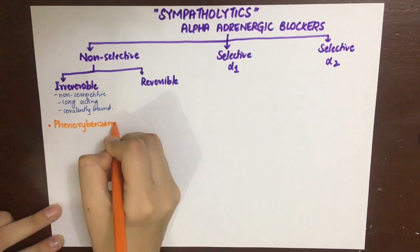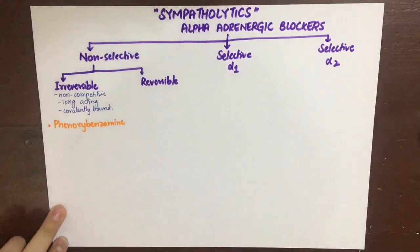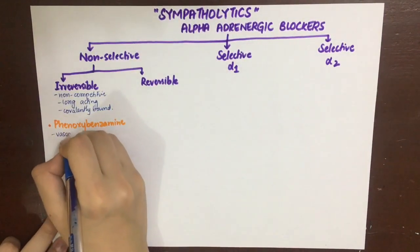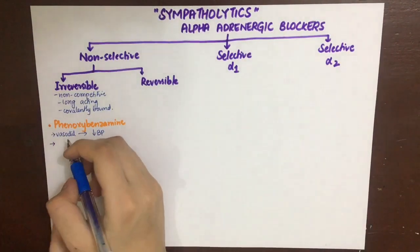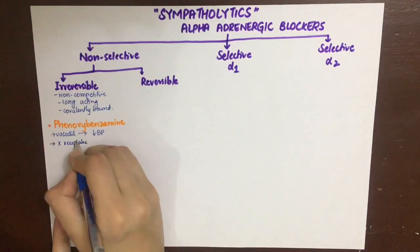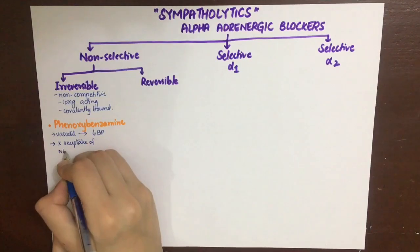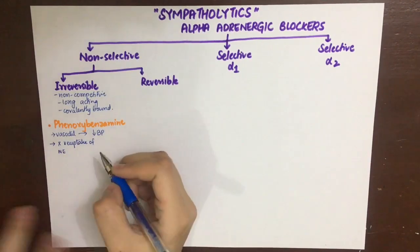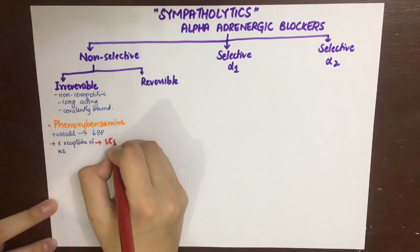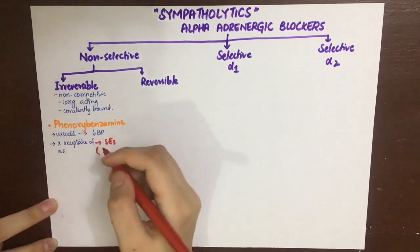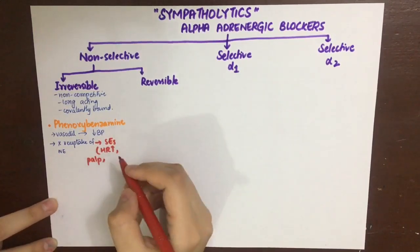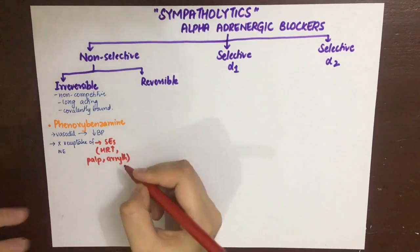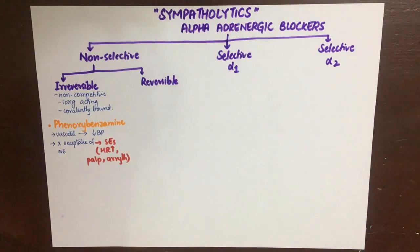Phenoxybenzamine has two main effects. Firstly, it causes vasodilation by inhibiting the alpha-1 receptor, thus decreasing blood pressure. It also inhibits the reuptake of norepinephrine, which leads to side effects including increased heart rate, palpitations, and the chance of arrhythmias.